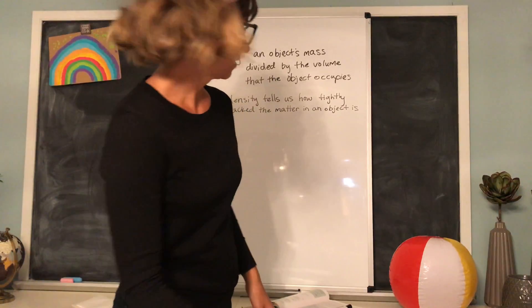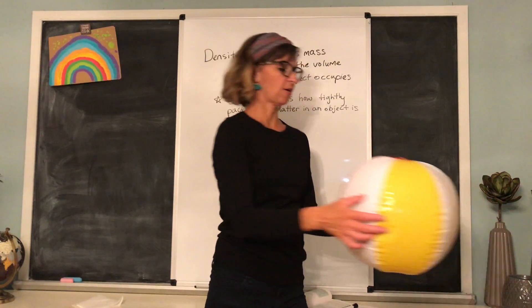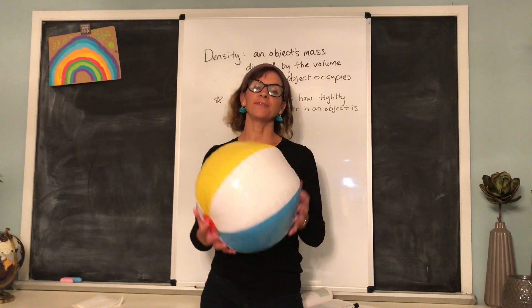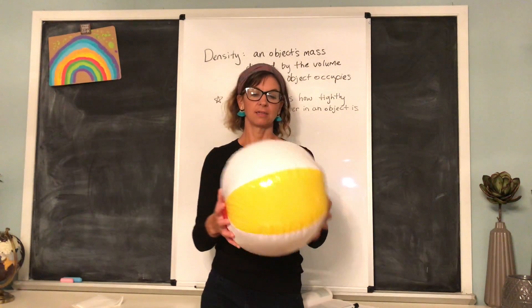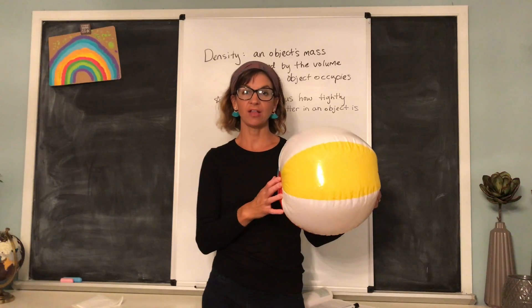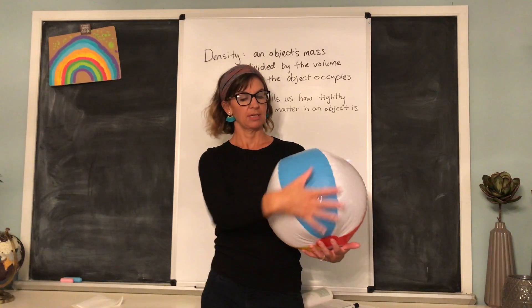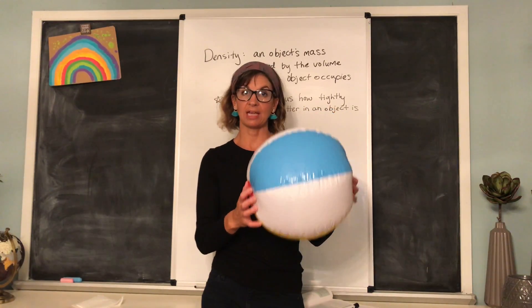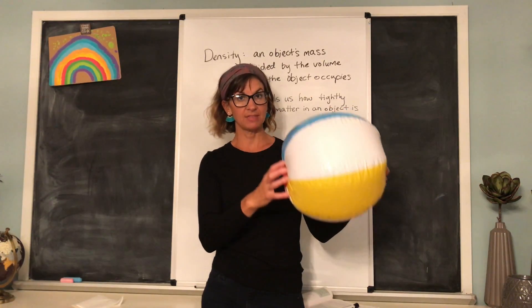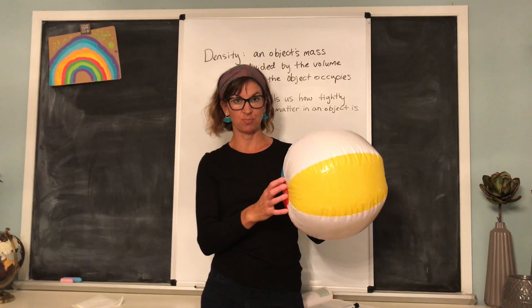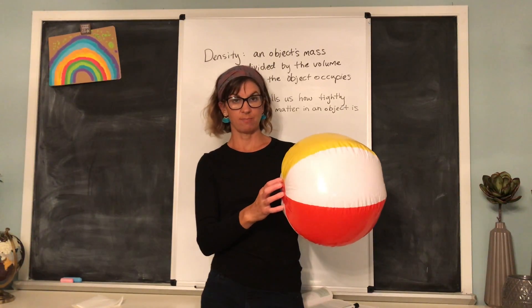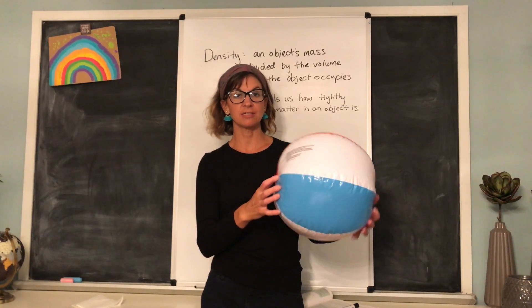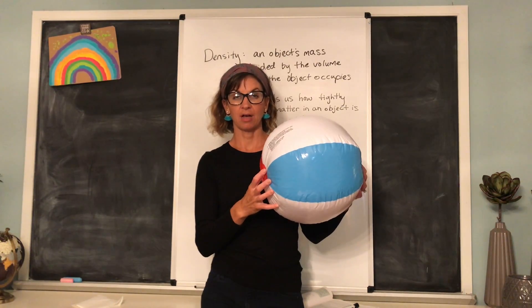Another example I have for you is this beach ball that's been sitting here. This beach ball I filled just by blowing up myself. And you can see that it's pretty light. And you can see how much volume it takes up inside this beach ball. That's the space that it takes up. So the density, if you wanted to calculate it, would be the mass of the air inside this beach ball divided by the volume, if you knew how many milliliters this beach ball took up.